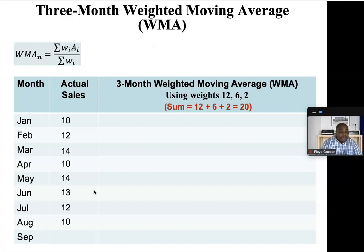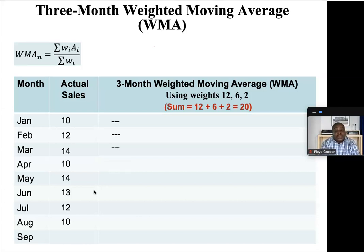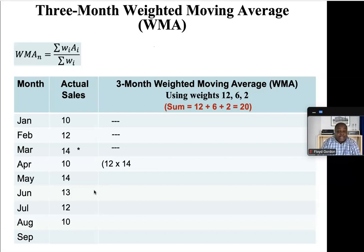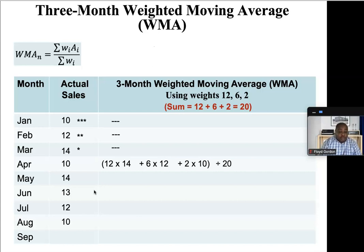It's a three-month weighted moving average, so we need the three previous months — we use the past to forecast the future. The first month we can forecast is April, because we have the three recent months. The highest weight is 12, multiplied by the most recent month March: 12 times 14. Plus the second highest weight six, multiplied by February: six times 12. Plus the third highest weight two, multiplied by January: two times ten. We divide by the sum of the weights, which is 20. That gives us a forecast of 13 for April.